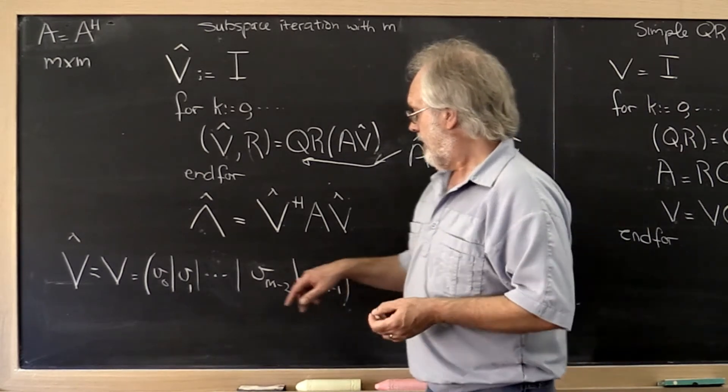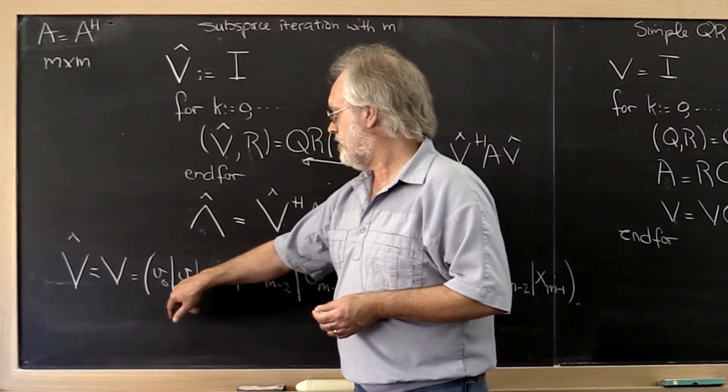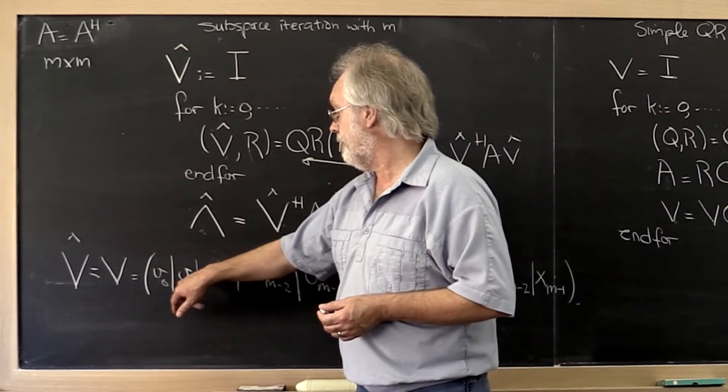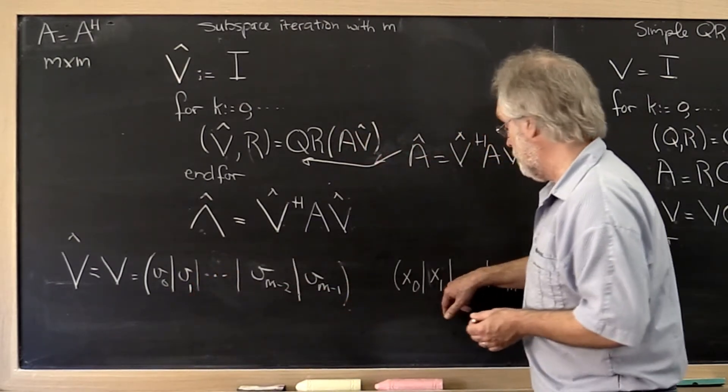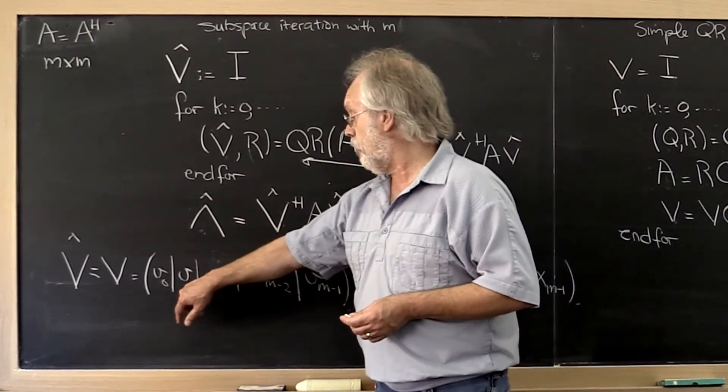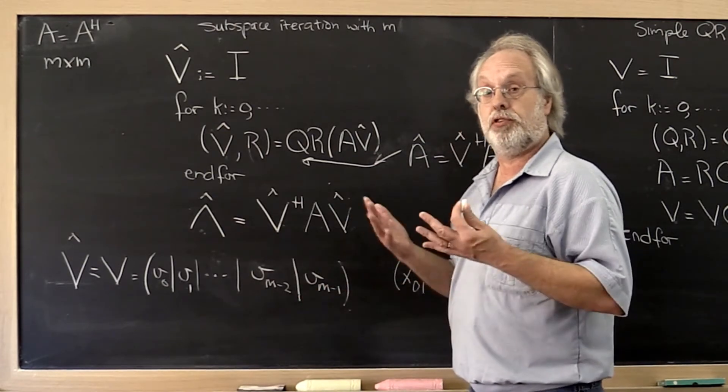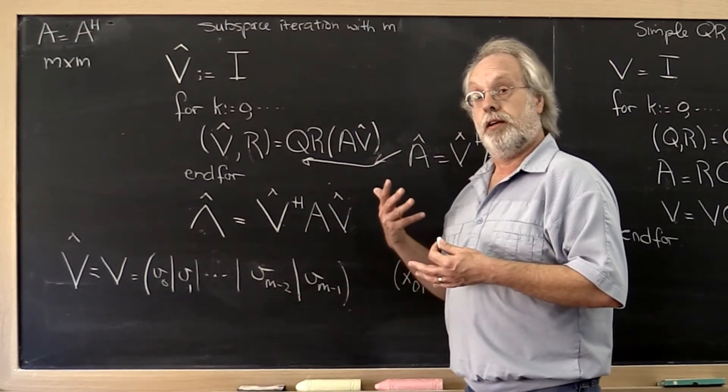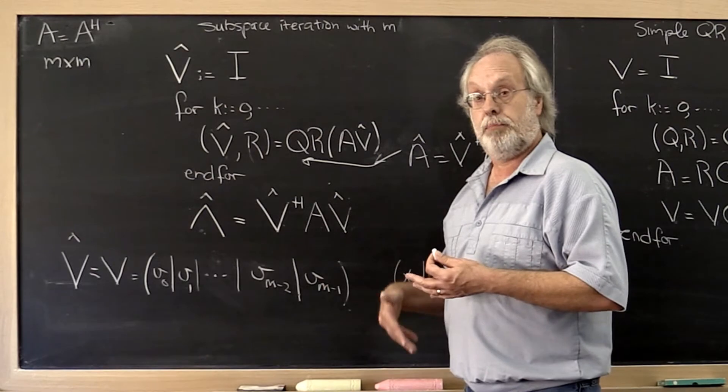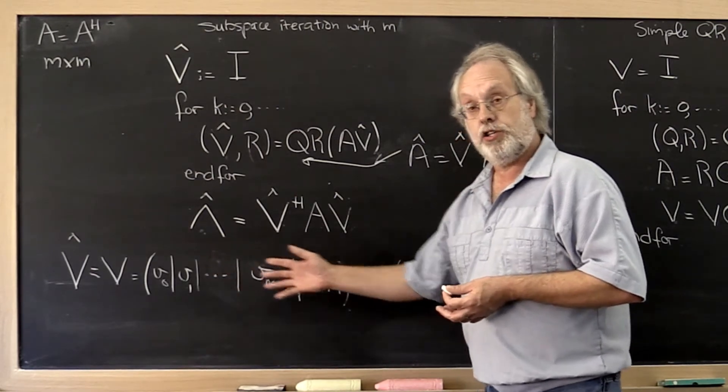Also, if you ask the question how fast the component in the direction of x2 disappears from v1, that's dictated by the absolute value of lambda 2 divided by lambda 1 and so forth.